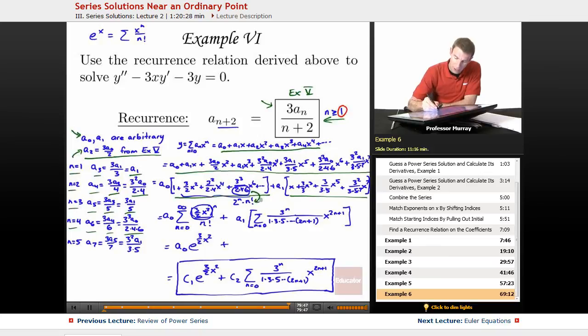And with a little clever accounting on these terms with A0, this was something that I covered in example 4, this series on the left turned into E to the 3 halves X squared.